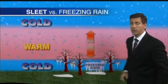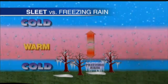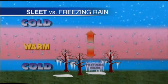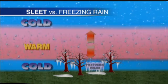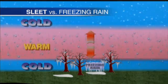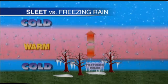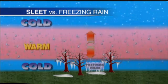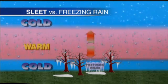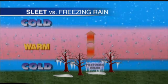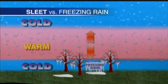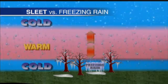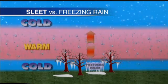Again, very different from sleet. So it's a good question and one we'll probably revisit. It never hurts to know the difference between precipitation types. There's a lot of confusion — some people think sleet and freezing rain are the same thing, and they're not. So when we're forecasting, it's good to understand how that actually comes together.